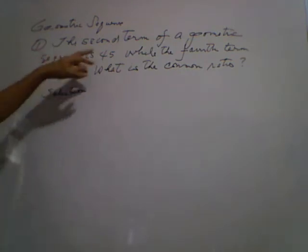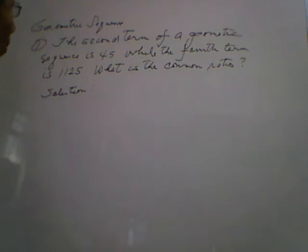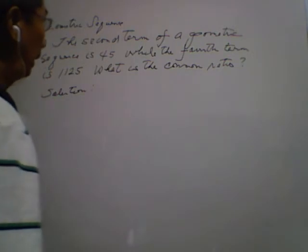And we have a problem here. Number one, the second term of a geometric sequence is 45, while the fourth term is 1125. What is the common ratio?